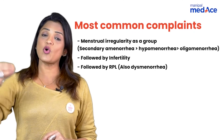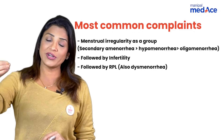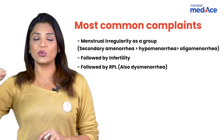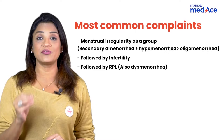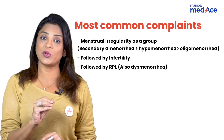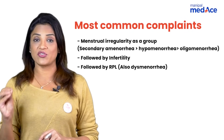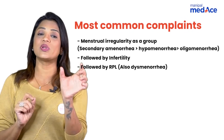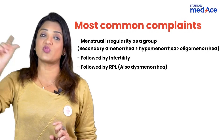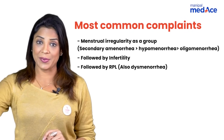Now, if they ask you and give you options between infertility, secondary amenorrhea, and hypomenorrhea, then you will choose infertility — not hypomenorrhea or secondary amenorrhea. Because as a group, menstrual irregularity comes first as a complaint.